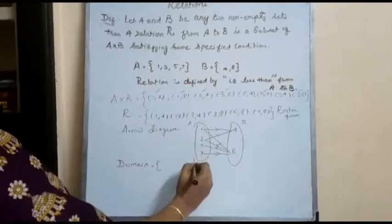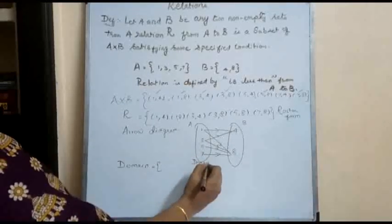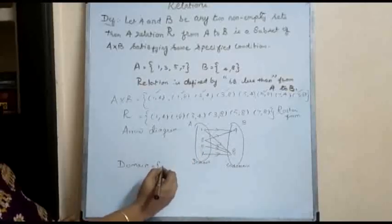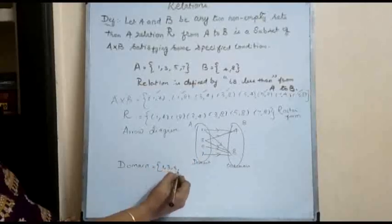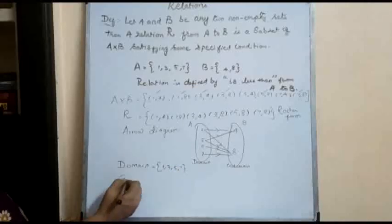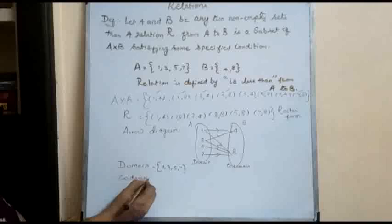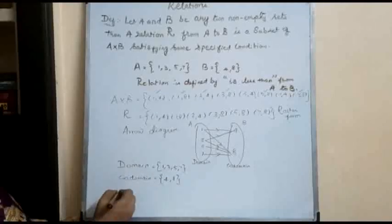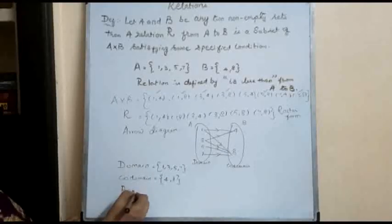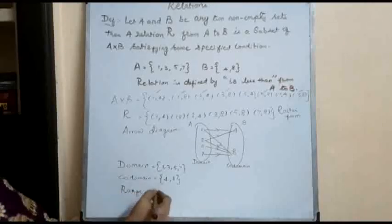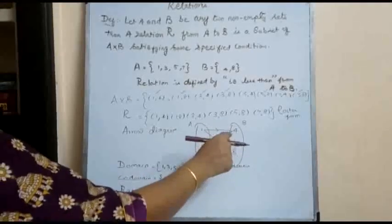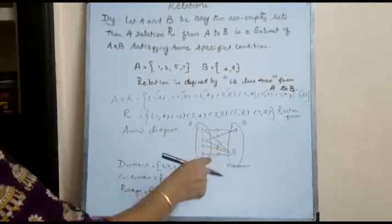Now we have some more concepts to learn. Domain: the set A is called the domain, and set B is called the co-domain. So here the domain is {1, 3, 5, 7} and the co-domain is {4, 8}. The range is all the output values we get from the relation — what are all the answers that we get in the relation are said to be the range.